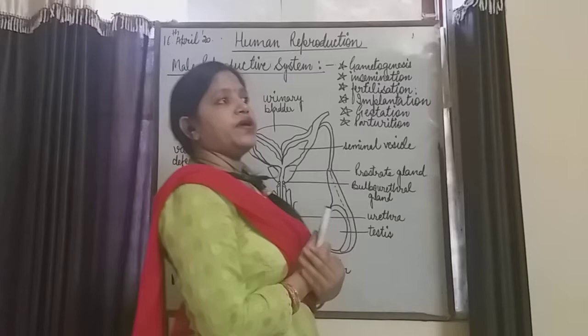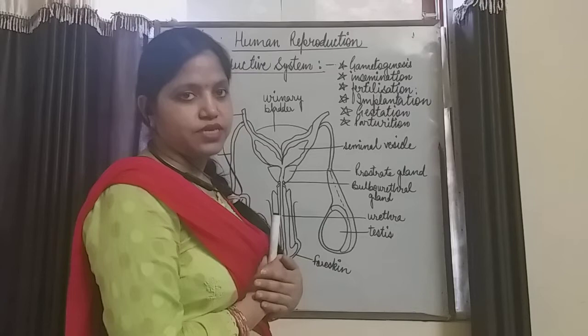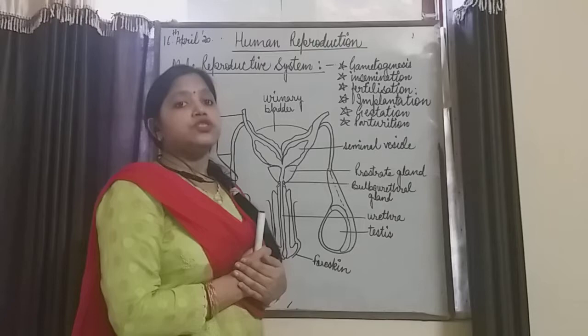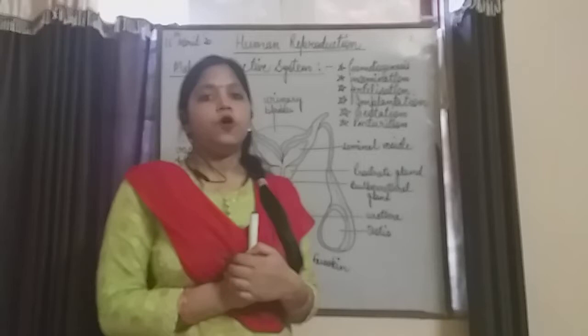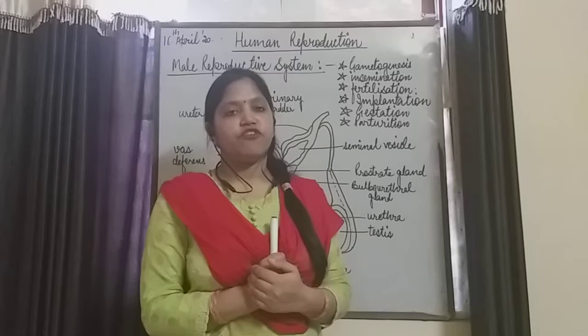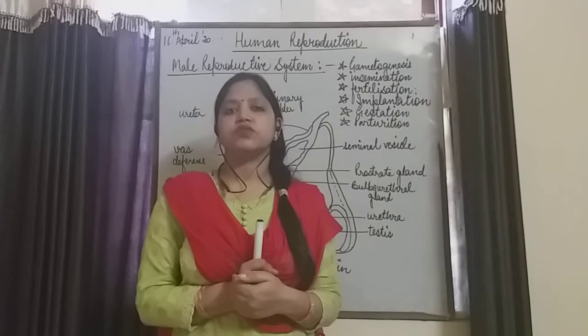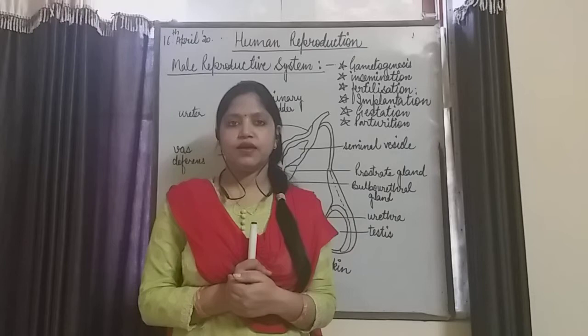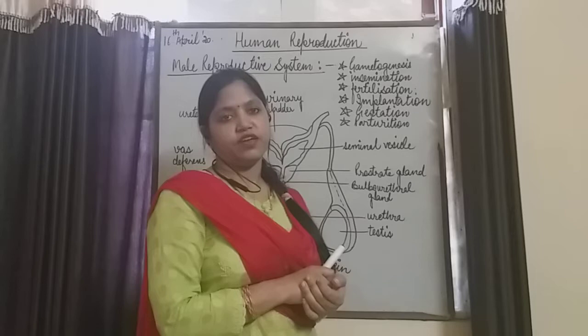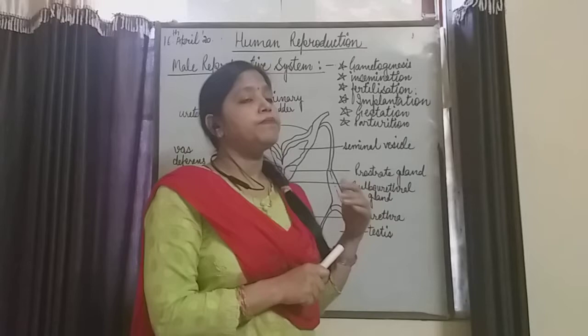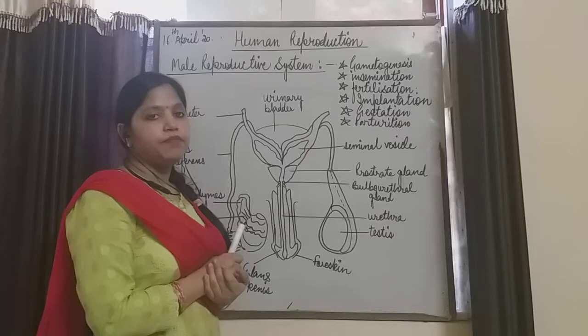Now the question arises: how and where does the formation of male and female gametes take place? Today we are taking the first topic of our chapter, that is the male reproductive system. The female reproductive system is very complex because the formation of baby takes place inside the human female, and the menstruation cycle also takes place inside the human female. We will discuss the female reproductive system in detail later.